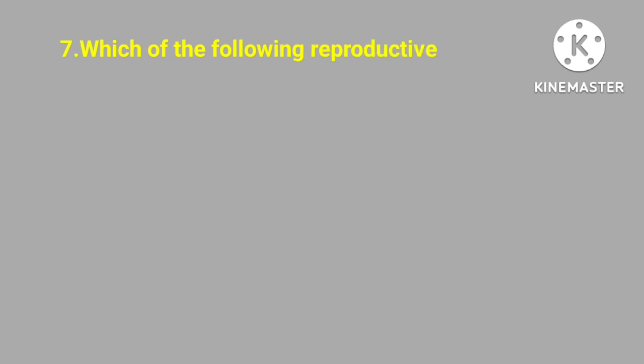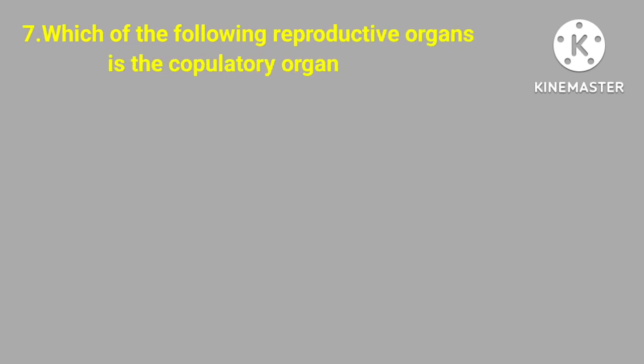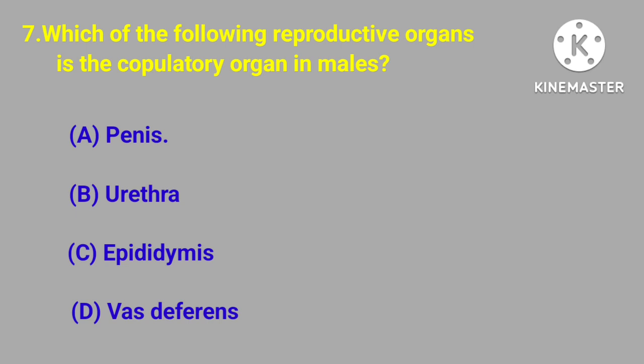Question number seven. Which of the following reproductive organs is the copulatory organ in males? Penis, urethra, epididymis, vas deferens. Correct answer is penis.